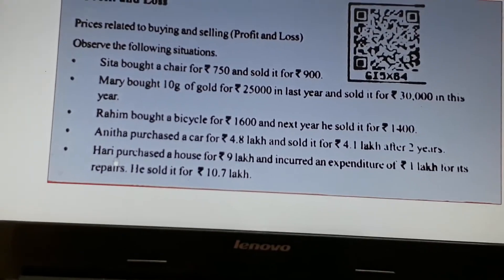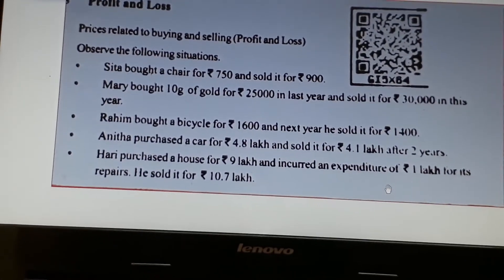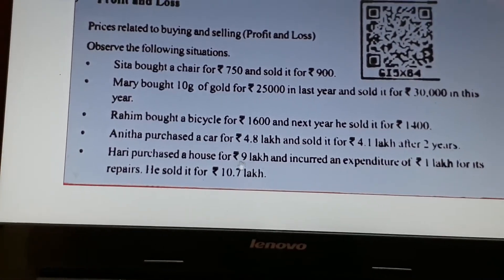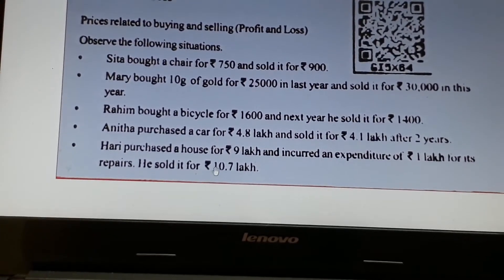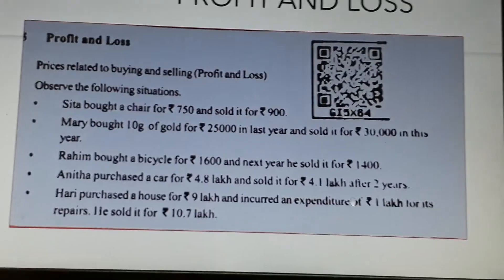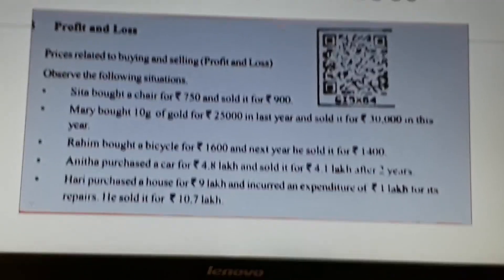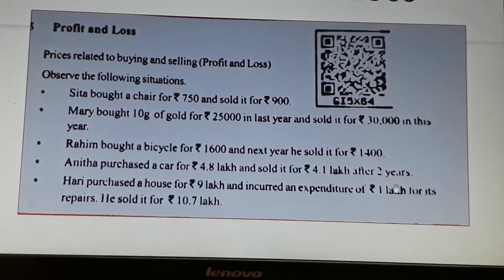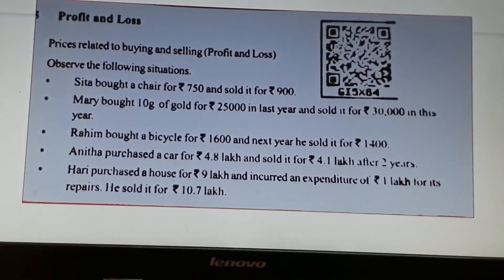Next example. Hari purchased a house for 9,00,000 rupees and incurred an expenditure of 1,00,000 rupees for repairs. That means the total cost price is 9,00,000 plus 1,00,000, which equals 10,00,000 rupees. He sold it for 10,70,000 rupees. The selling price is higher, so there is a profit. The profit is 10,70,000 minus 10,00,000, which equals 70,000 rupees.